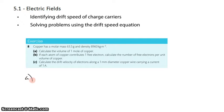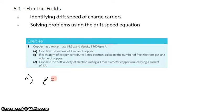Question 8, Part A. Copper has a molar mass of 63.5 grams. That means one mole of copper has a mass of 63.5 grams and a density of 8,960 kilograms per cubic meter. Part A, we want to calculate the volume of one mole of copper, and it all comes down to the density.